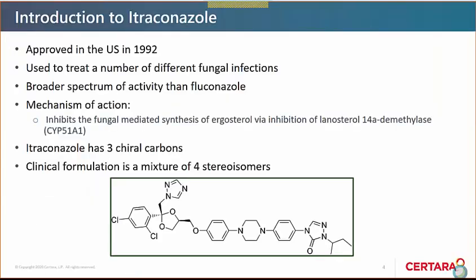Itraconazole has been used for a long time — it was approved in the US in 1992. Clinically it's used to treat a number of different fungal infections and has a broader spectrum of activity than drugs like fluconazole. Its mechanism of action is inhibition of the fungal-mediated synthesis of ergosterol by inhibition of the lanosterol 14-alpha demethylase pathway. The structure of itraconazole has three chiral carbons, and because of this the clinical formulation is a mixture of four stereoisomers.